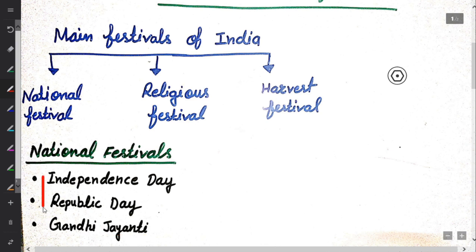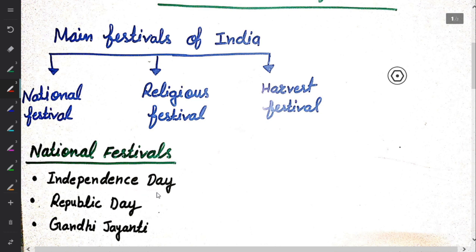First is Independence Day. Independence Day is celebrated on 15th August. It is celebrated to mark the day on which we became free from British rule in 1947. On this day, the Prime Minister of India hoists the national flag at the Red Fort in Delhi.